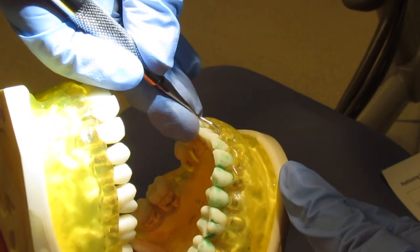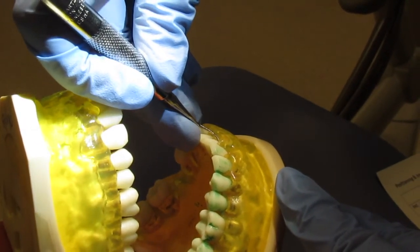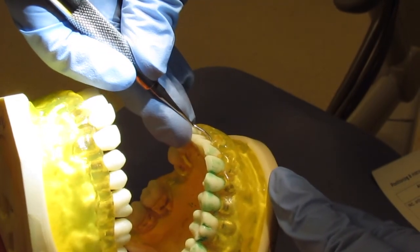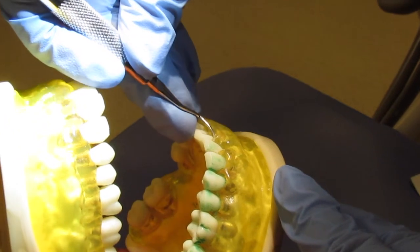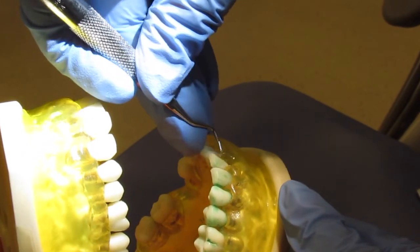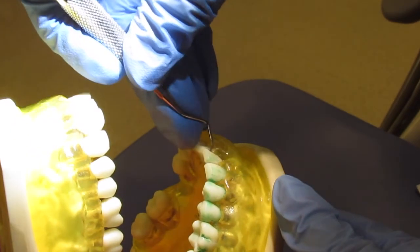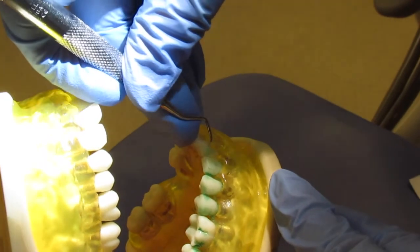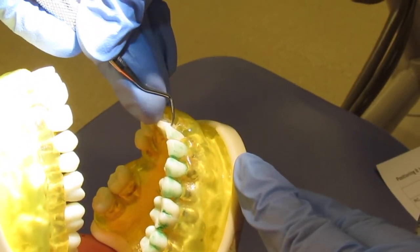We're going to do the universal curette in the anterior. I'm going to do surfaces toward me. So you start in the middle of the tooth, put the leading third against the tooth surface, and initiate little sideways rocking strokes. As you're rocking back and forth, you're going to be pivoting and rolling so you keep the leading third adapted against the tooth. You go halfway and then you stop.